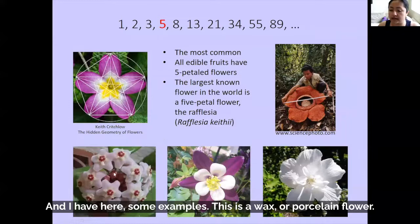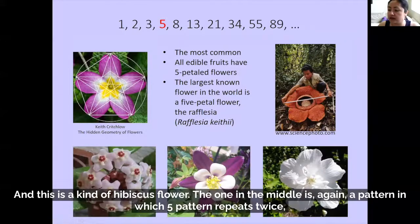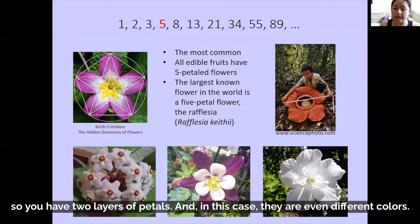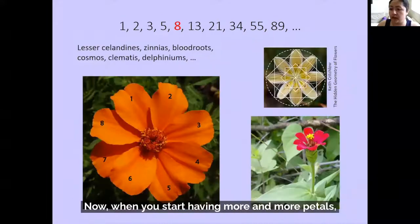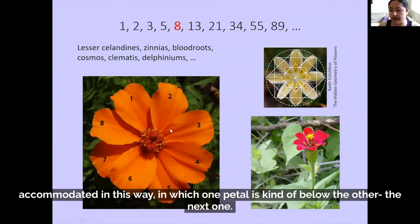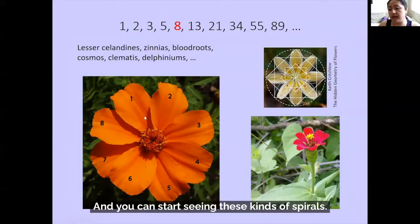The one in the middle is again a pattern in which five petals repeat twice, so you have two layers of petals — in this case even of different colors. Now, when you start having more and more petals, you start seeing that they are accommodated in this way, in which one petal is kind of below the next one, and you start seeing these kinds of spirals.